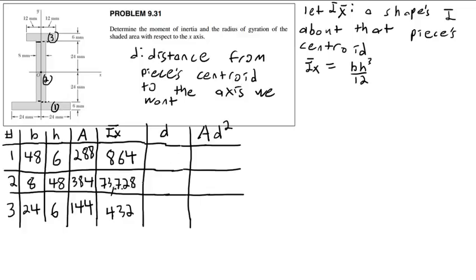Now we need to find our d values. For piece two it's fairly easy — the d is zero. The centroid of the middle piece is exactly on the x-axis.